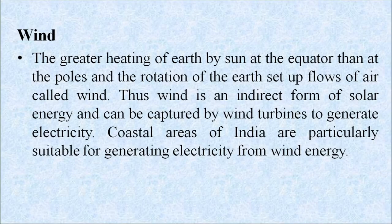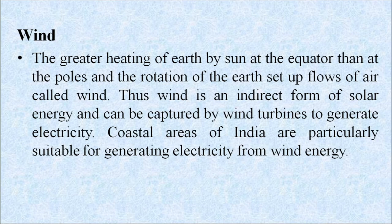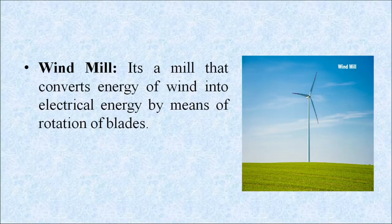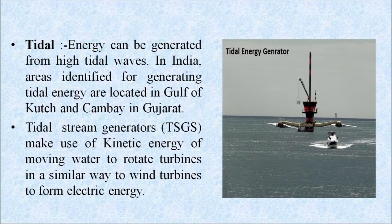Wind is caused by the greater heating of the earth by the sun at the equator compared to the poles, combined with the rotation of the earth, setting up flows of air. Wind is an indirect form of solar energy and can be harnessed by wind turbines to generate electricity. Coastal areas of India are particularly suitable for generating electricity from wind energy. A windmill converts the energy of wind into electrical energy by means of rotation of blades. Tidal energy can be generated from high tidal waves; areas identified for tidal energy in India are located in the Gulf of Kutch and Gulf of Khambhat in Gujarat. Tidal stream generators use the kinetic energy of moving water to rotate turbines, similar to wind turbines, to generate electrical energy.